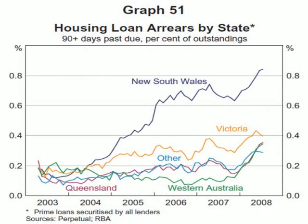The RBA review also included this graph, showing mortgage default rates across each state. I draw your attention to the very sharp pick-up in mortgage defaults in Western Australia and Queensland. Again, this adds further support to my views stated in earlier bubbles that housing markets in these two states are the most vulnerable to price falls. I would also draw your attention to the rise in default rates in NSW after the Sydney housing market peaked there in 2003.